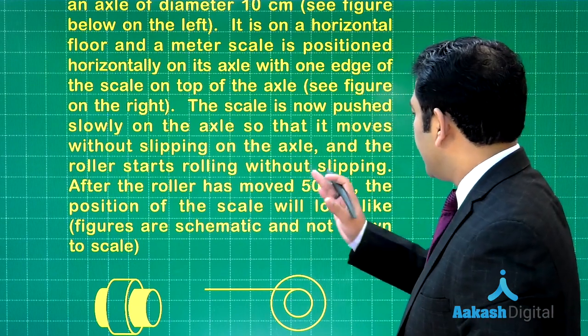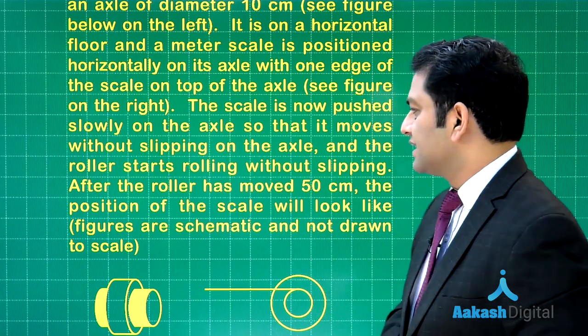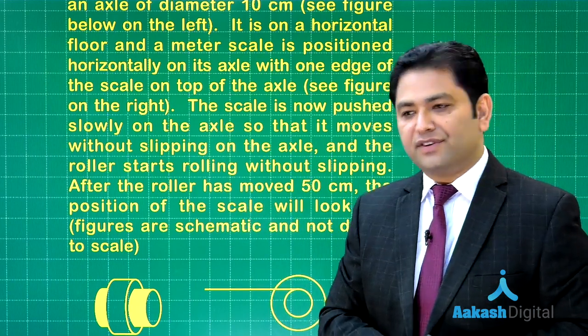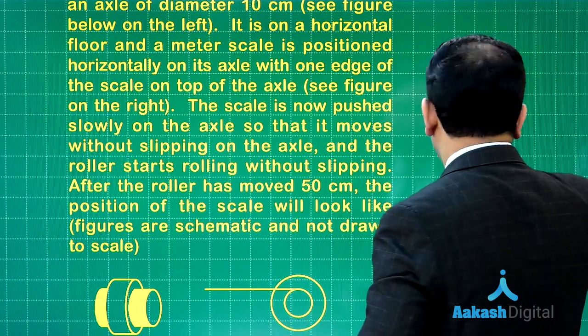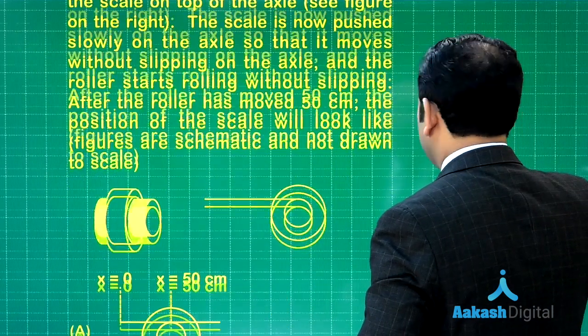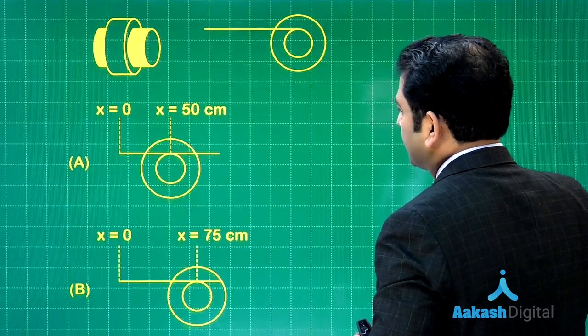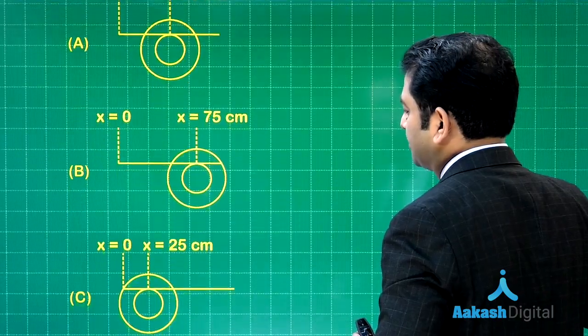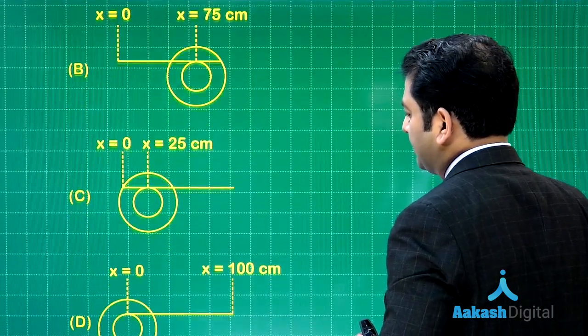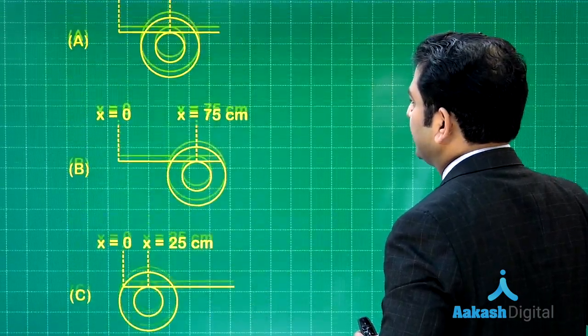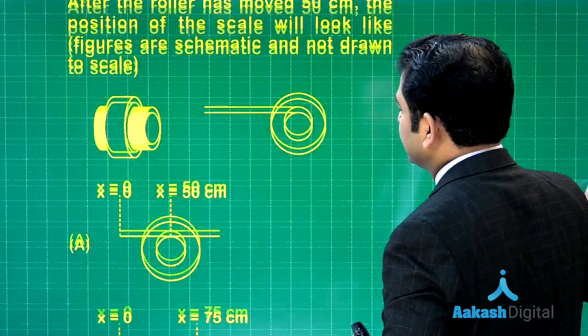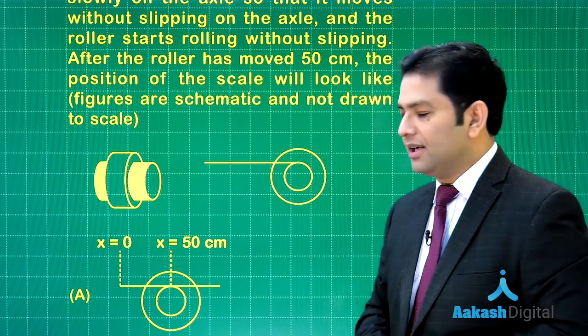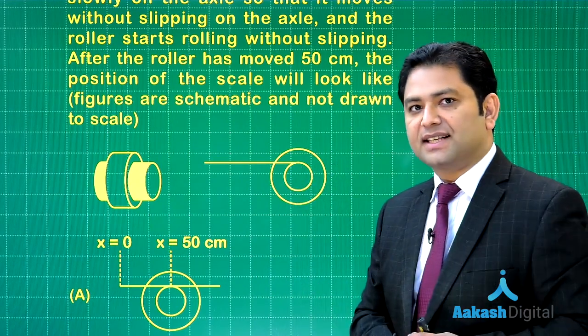So everywhere it is a condition of pure rolling. And what is to be calculated? After the roller has moved 50 centimeter—that means when the center of mass of the roller moves by 50 centimeter—we need to show what would be the position of the meter stick. Option number A, option number B, option number C, and option number D. So essentially we need to understand what distance has the meter stick moved by the time the roller has moved a distance 50 centimeter.